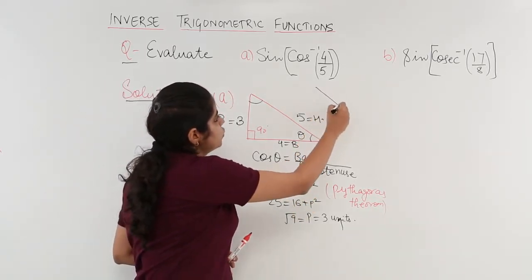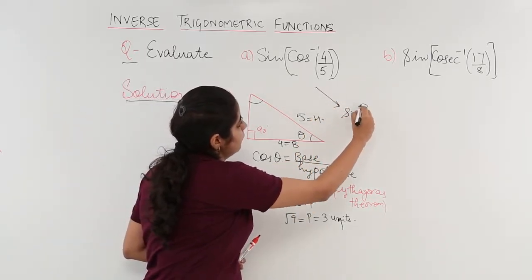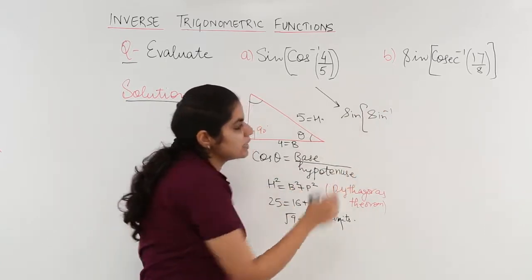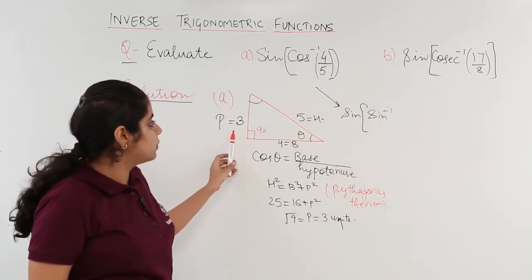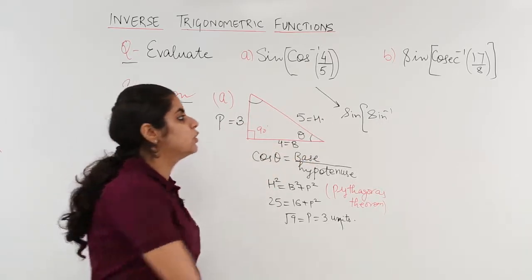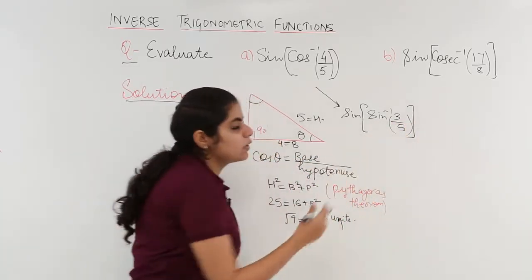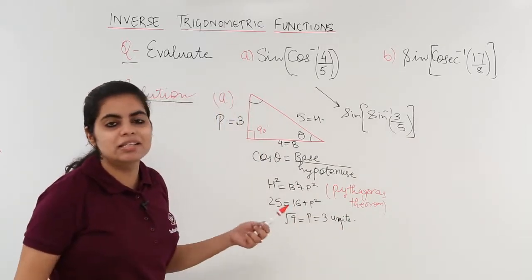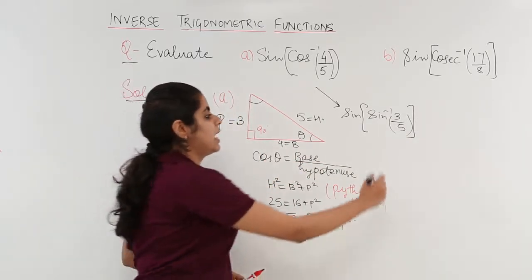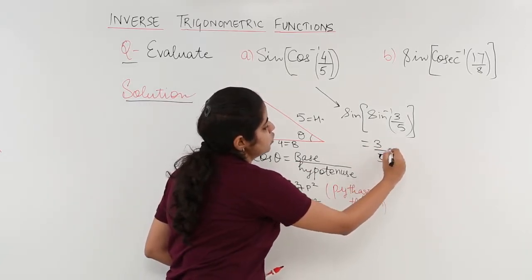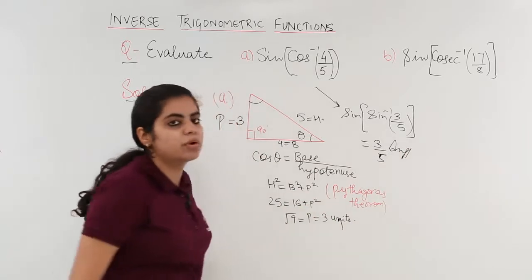So, the question now changes to sine and it becomes something in the form of I want sine inverse. So, sine inverse would be called perpendicular upon hypotenuse that is 3 upon 5. Now, sine and sine inverse get cancelled. They nullify each other's effect. The answer is left as 3 upon 5 only. So, my answer is 3 upon 5.